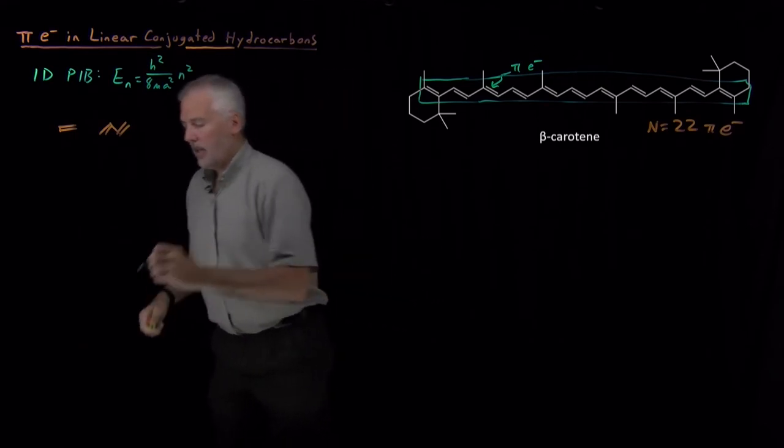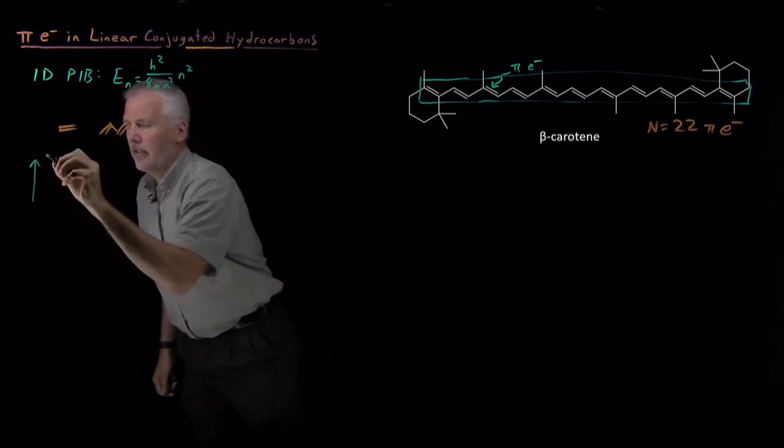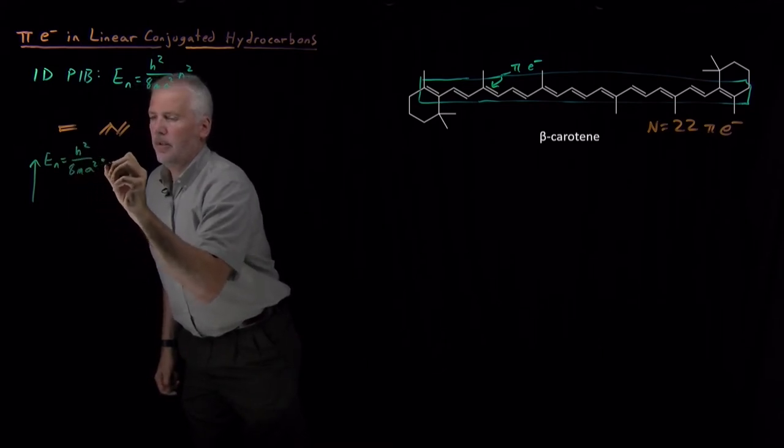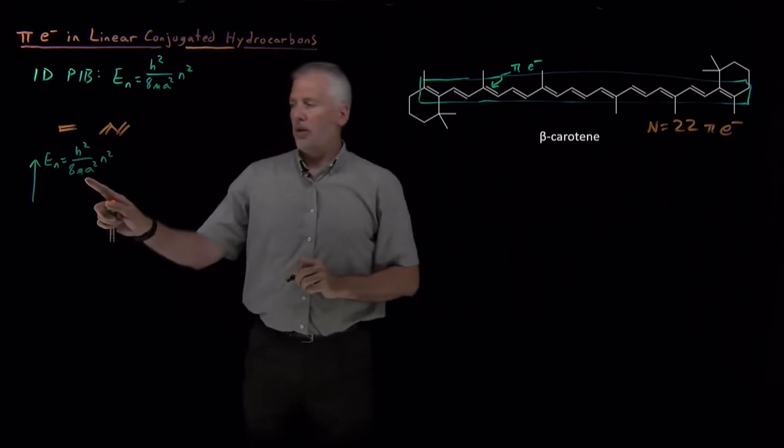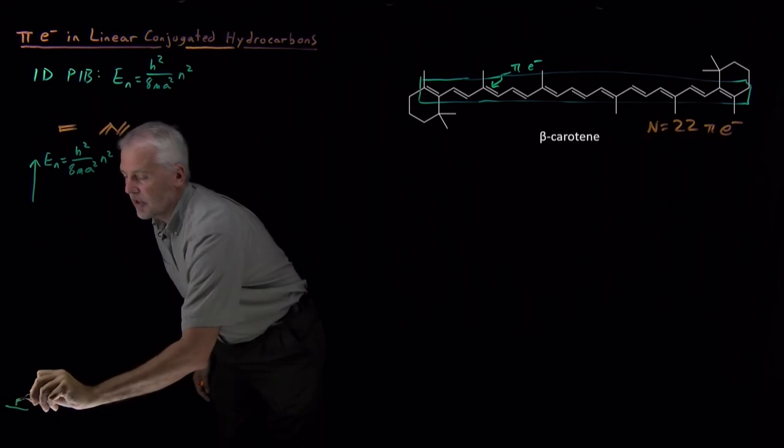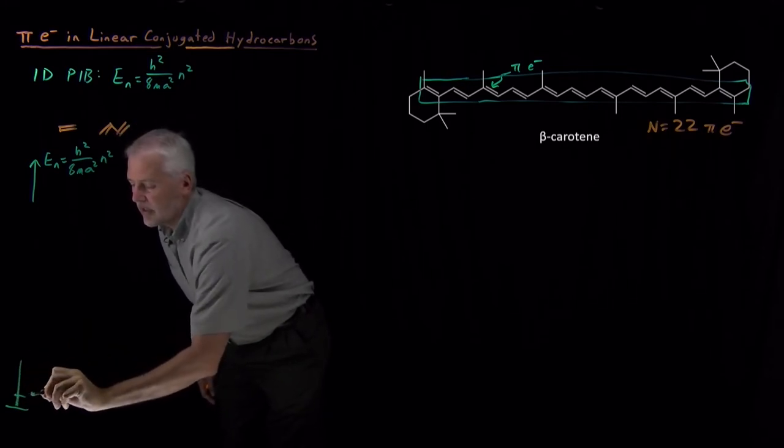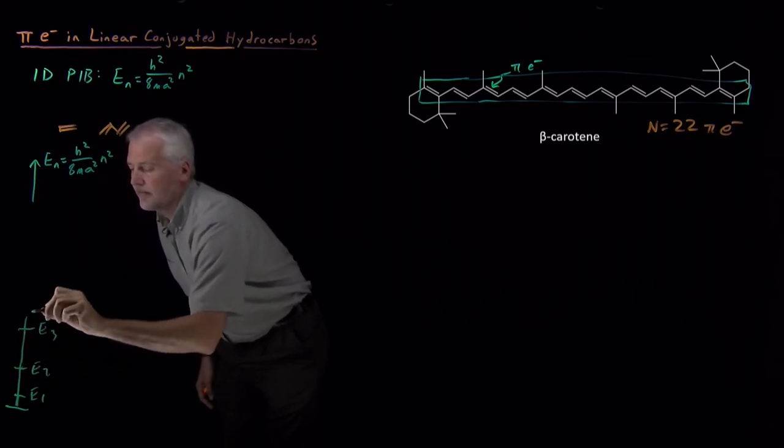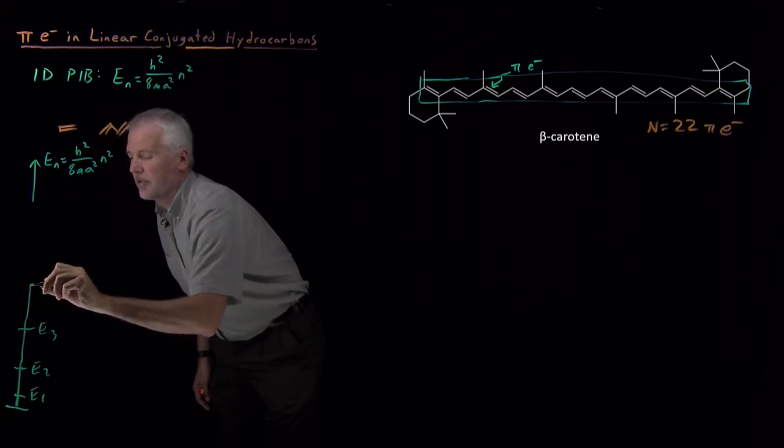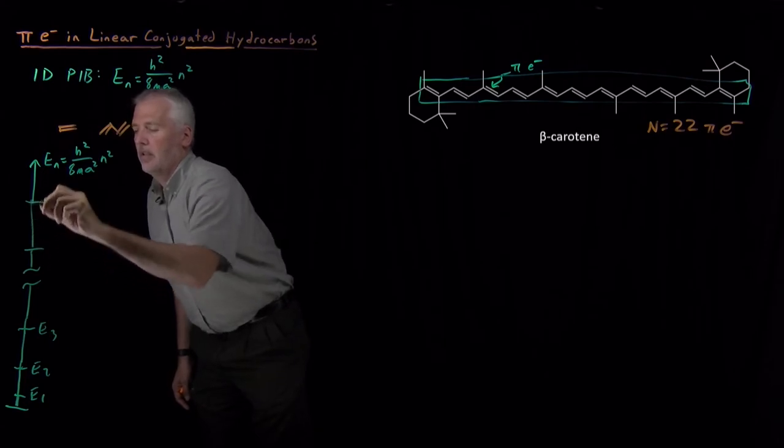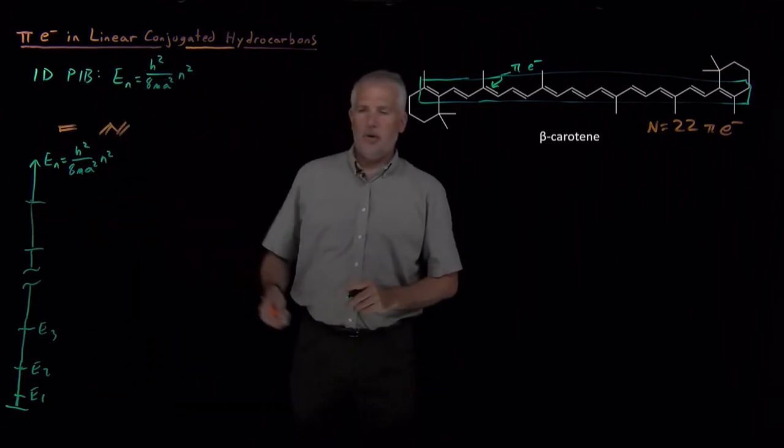We have energies. We can predict if we know these constants M and A. We can predict the energies of these electrons within the molecule. So there's a ground state E1, E2, E3, and so on. And of course, this goes up for a long way.